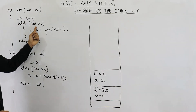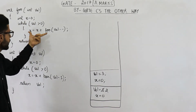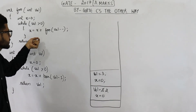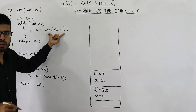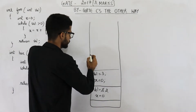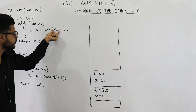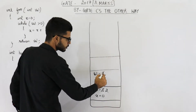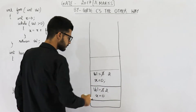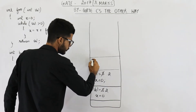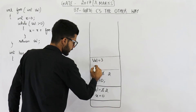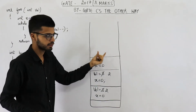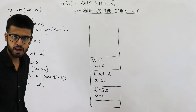Similarly you will execute this line. The condition is true, again you will execute this line. In this activation record you are trying to update the value of x, and the new value assigned will be current value plus whatever is returned by this function call. Here also you will use the current value of val which is 3, so we are passing 3, and this will be decremented to 2 because of minus minus. In the new activation record val will get 3, x will get 0. Again the loop will evaluate to true, again you will pass 3, this will become 2, and this process will keep on happening infinitely.